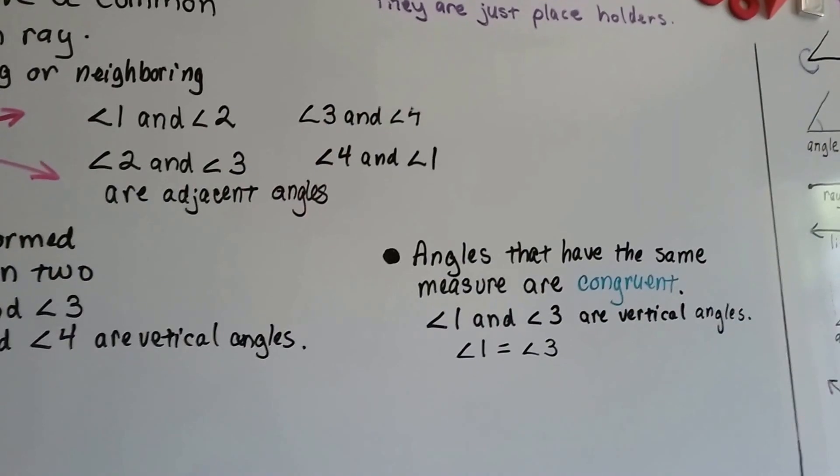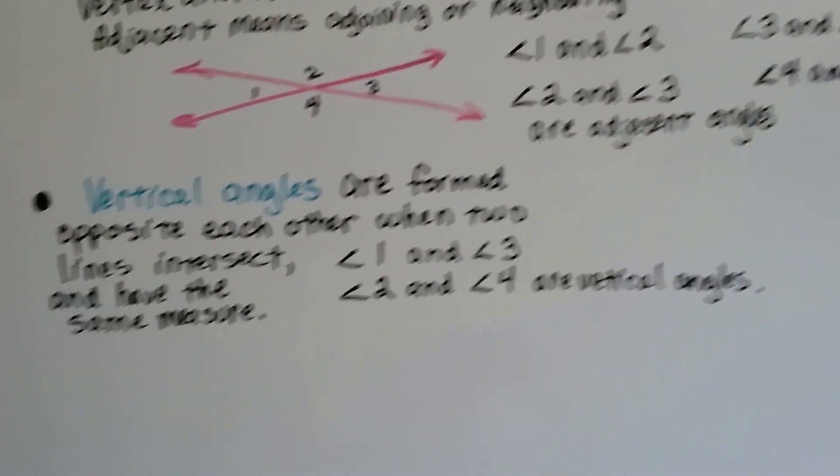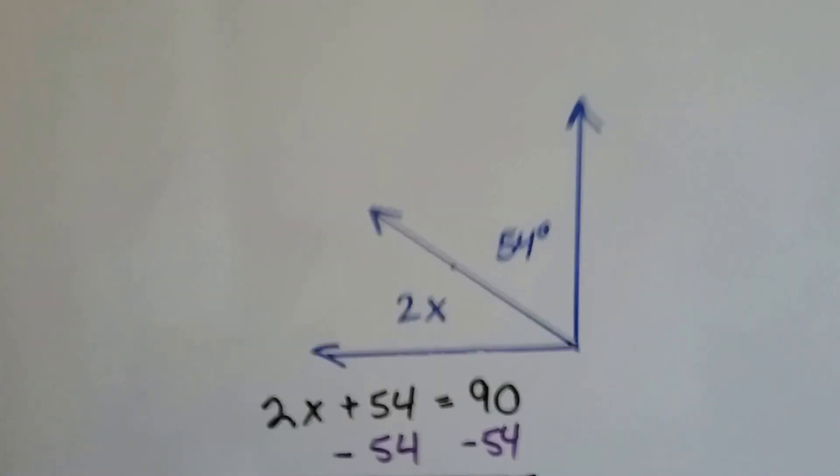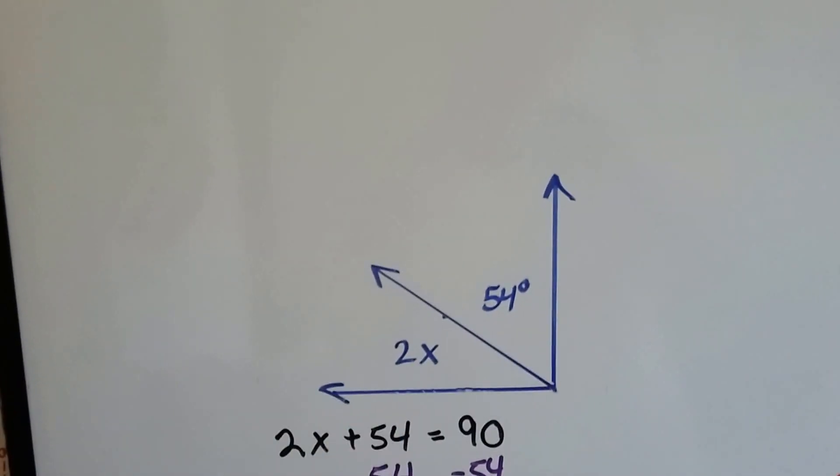And we talked about how congruent means that they have the same measure. They're equal in measure. So I'm going to show you how we can solve a missing angle measure with inequalities.